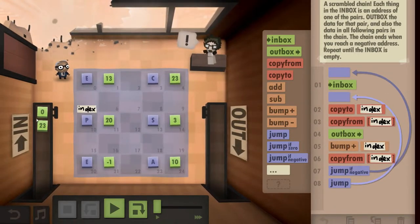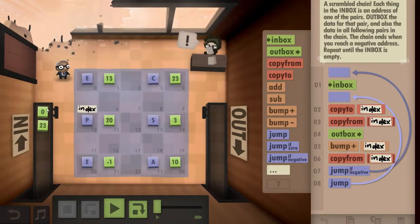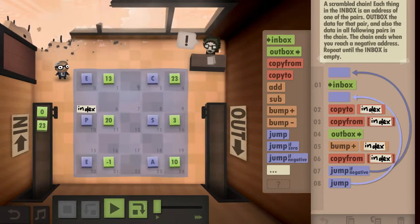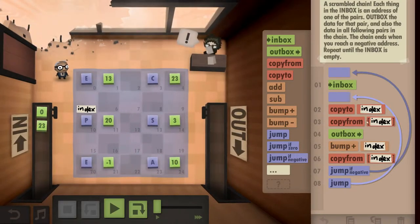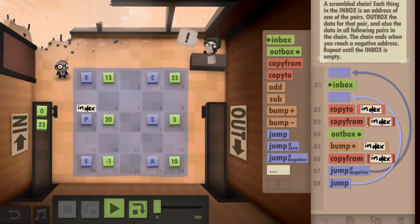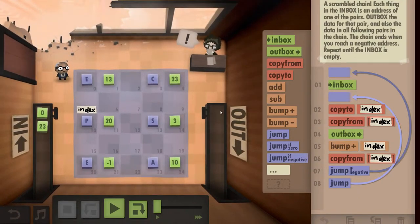So the idea is I take from the inbox, this is an index on the floor. So that's why I created this field index. I just copy it to that index field otherwise I can't use it as an address unfortunately. I copy from what is indexed by that or addressed by that. So in this case it's zero, I would take the E, put that to the outbox.